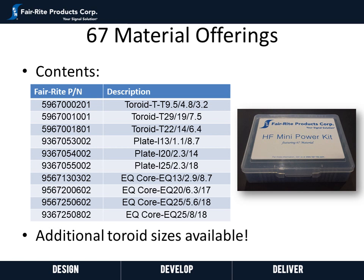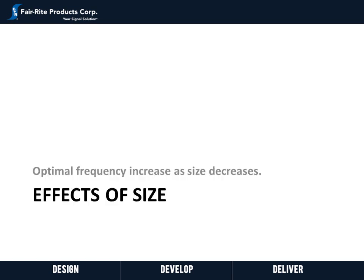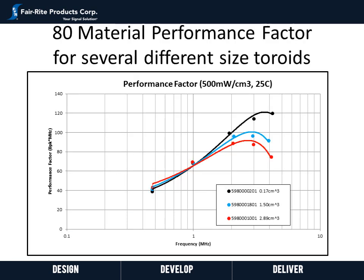We will also look at a kit in 79 and 80 materials. Next, we will talk about core size and optimal frequency. Here we looked at three different size toroids in 80 material ranging from a volume of 0.17 centimeters cubed to 2.89 centimeters cubed and plotted performance factor versus frequency. Performance factor is essentially a figure of merit — the higher the better the material performs, meaning lowest losses. It is the peak flux density times the frequency where the power loss density of the core is 500 milliwatt per CC. Here we see that all sizes are about the same in performance factor up until a little over 1 megahertz, but as the size increases the overall peak value decreases and the peak frequency drops.